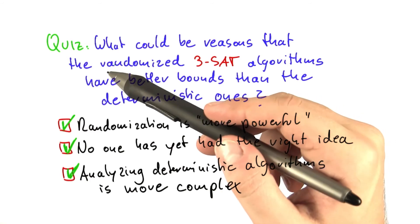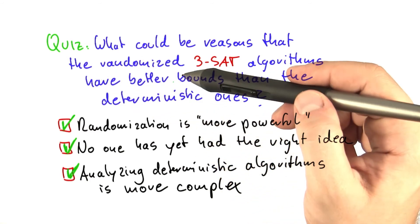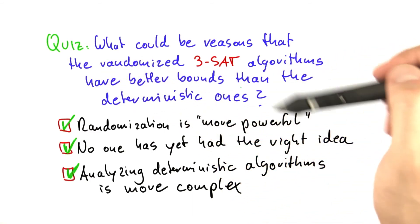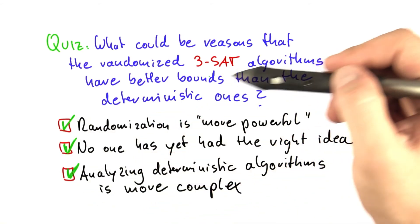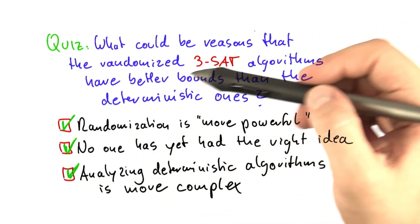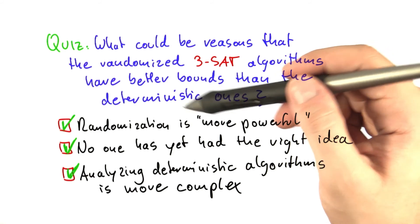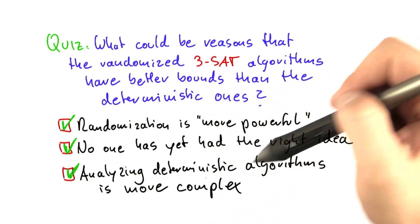And by analysis, I really mean that you don't really have to modify the algorithm that much, but just look at its performance a little more closely. So there are a couple of reasons why the randomized 3-SAT algorithms could be better than the deterministic ones, but of course, we don't know for sure.